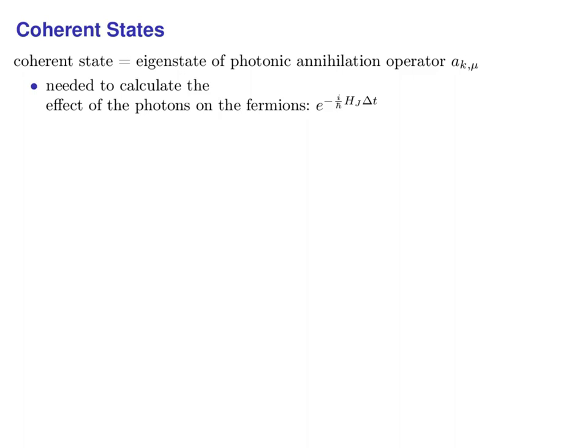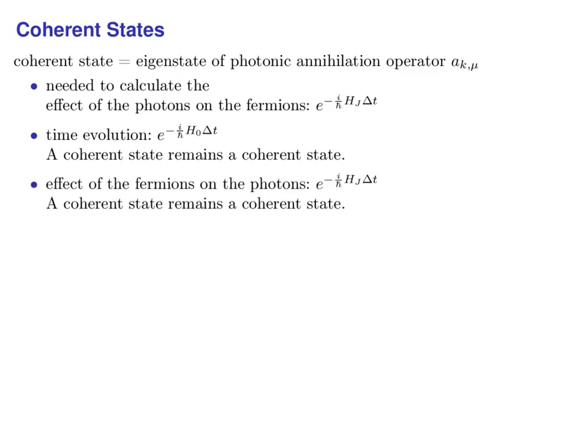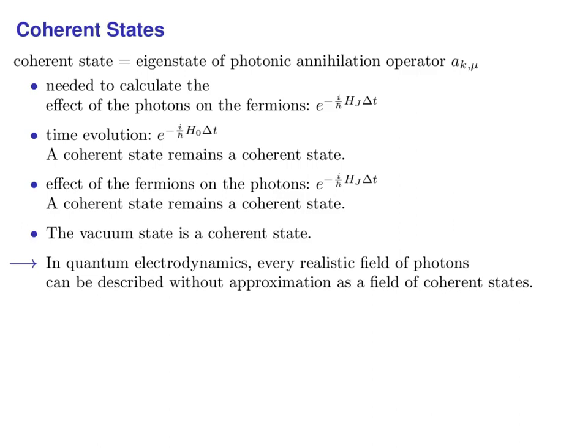When we want to know how a field of photons in a given state acts on the fermions, we must decompose the state of the photons into eigenstates of their annihilation operators — the so-called coherent states. The time evolution of coherent states is well known and easy to compute in momentum representation. In particular, a coherent state evolving in time remains a coherent state. Another close look at the interaction Hamiltonian reveals that the coherent state remains a coherent state under the influence of the fermions. Taking into account that the vacuum state is a coherent state as well, every realistic system of photons resulting from interaction in QED can be described without approximation as a field of coherent states.